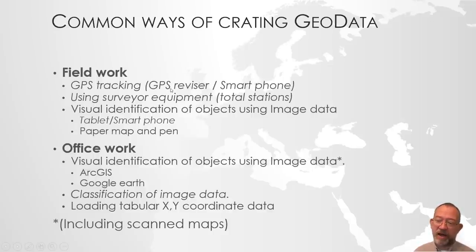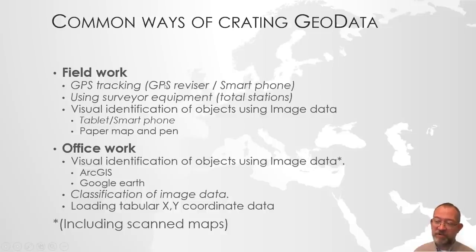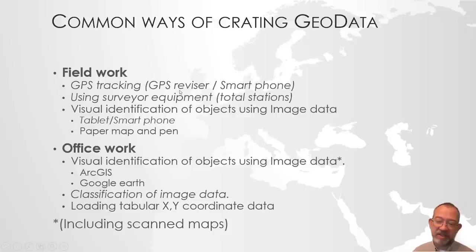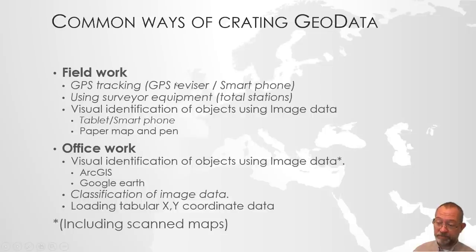GPS receivers typically don't have the most advanced user interface, so you can usually just put in a waypoint, which is the location. There are two terms to be aware of: a track, which is where the GPS has gone through time, and waypoints, where you can enter a simple text such as noting what you observed. They typically don't have smart keyboards, so you want to make small entries. Handheld GPS devices can be used for registration of waypoints, points, and lines, but data entry is not very efficient.